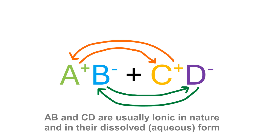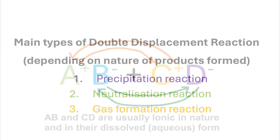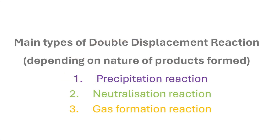Depending on the nature of the products formed, a double displacement reaction can be a precipitation reaction, a neutralization reaction, or a gas formation reaction.